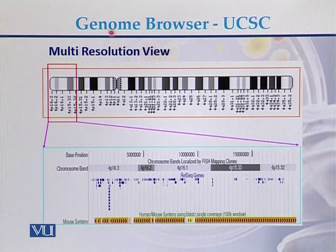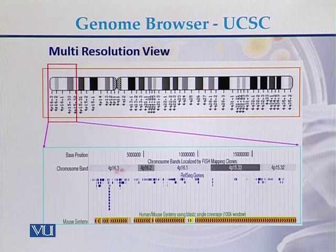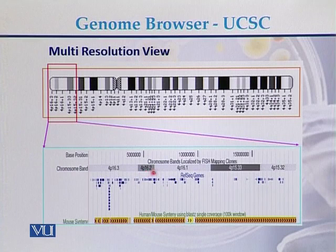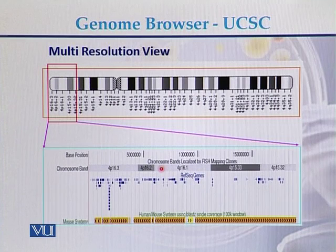This is a multi-resolution view in which we can see different banding patterns — light bands and dark bands. If we magnify it, we can see chromosome number four: band 4p16.3 is a dark band, 4p16.2 is the next, then light band 4p16.1. This banding pattern can be seen at the UCSC genome browser, which is why it is called a multi-resolution view.